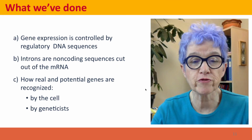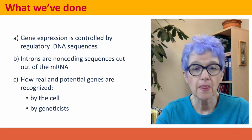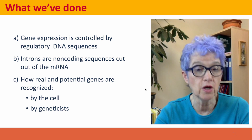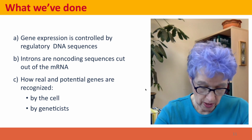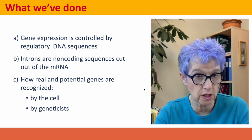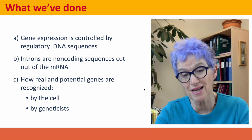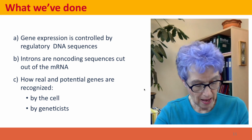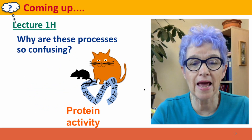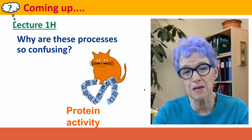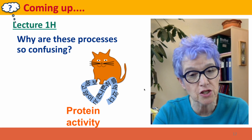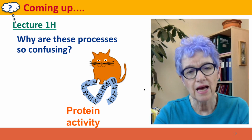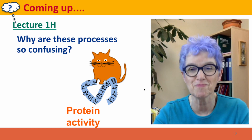So what have we done? We've talked about how gene expression is controlled by regulatory sequences, in particular introns and how regulatory sequences at the junctions allow them to be spliced out of messenger RNA. We talked about how real and potential genes are recognized by the cell, and how geneticists recognize genes both in organisms through crosses and in DNA sequences through sequence analysis. Coming up next is a lecture to help you make sense of these very complicated processes — many students find it easy to get confused about replication, transcription, and translation — so the next lecture is an attempt to clarify these relationships. I hope to see you there.